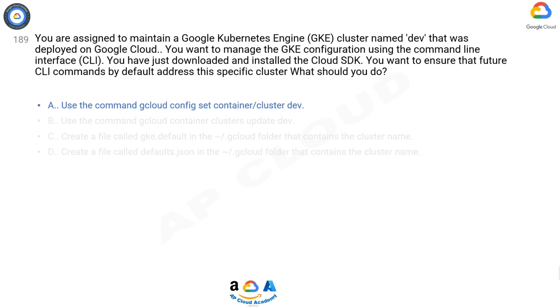The correct answer is A. To set a default cluster for gcloud commands, run the following command: 'gcloud config set container/cluster [cluster_name]'.